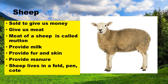Let's look at sheep. You can also sell a sheep to get money. Sheep are a source of income to the farmers. The meat of a sheep is called mutton. Sheep provide milk, fur and skin, and manure. A sheep lives in a fold.